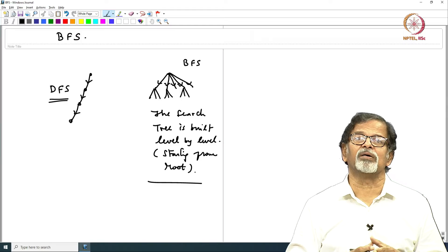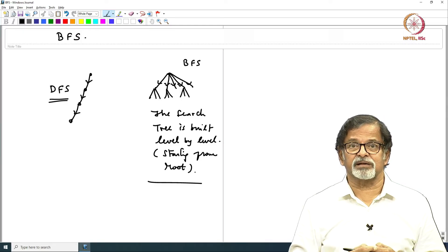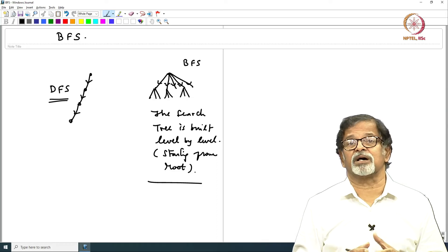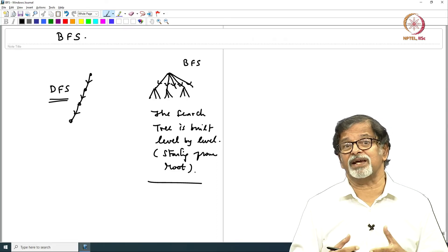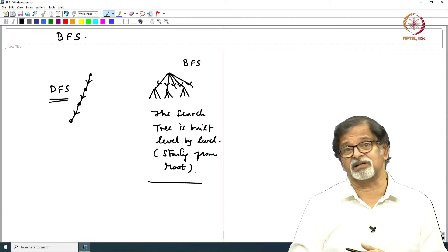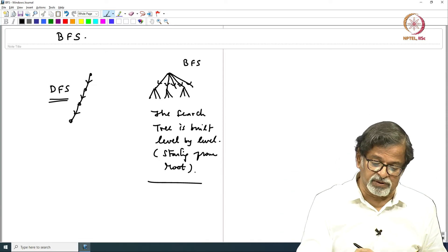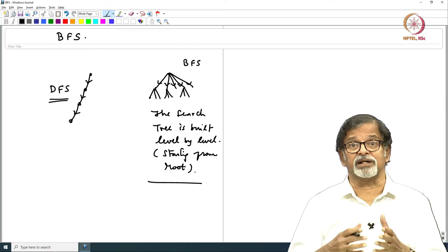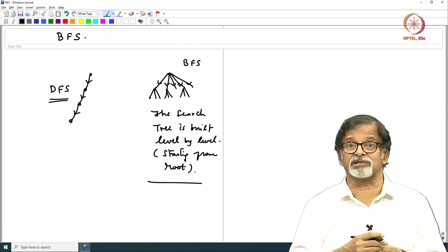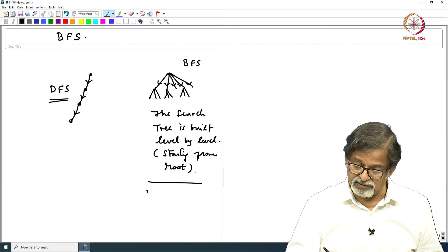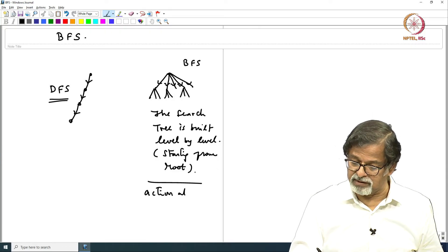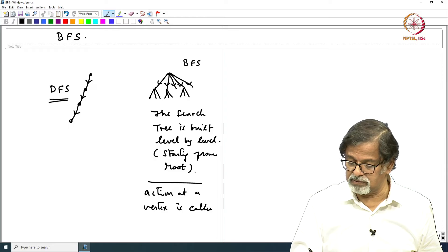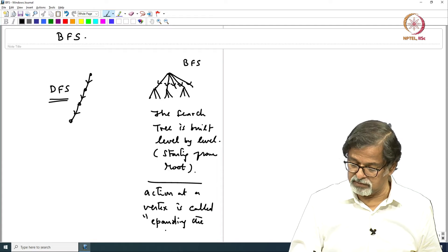The breadth-first search can be implemented in a natural way by using a data structure called queue. We will have a queue of vertices. In queue the vertices that are to be expanded - we say expanded because all its neighbors are going to be considered. Here one neighbor is considered and then you went depth, but here I am going to consider all neighbors, and that is the reason why the action at a vertex is known as expanding the vertex.